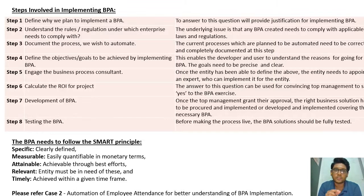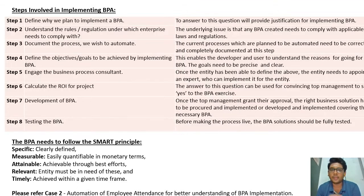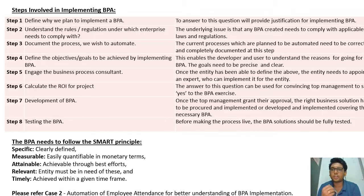Step three: document the process we wish to automate — the current processes planned for automation need to be correctly and completely documented. Step four: define the objectives or goals to be achieved by implementing BPA, so both the developer and the user understand the reasons for going for BPA.